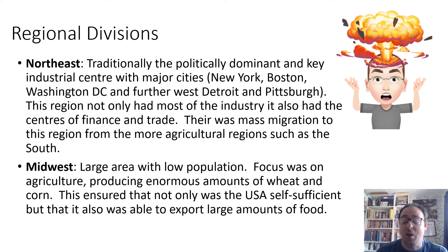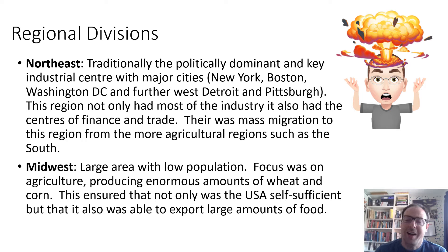The Northeast is where most of the original European settlers had settled, and there was mass migration into this region from more agricultural areas such as the South, as people went seeking work — particularly during the war period when demand for labour was so high.